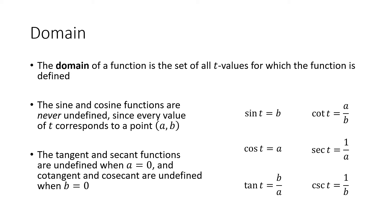Because every angle corresponds to a point on the unit circle, and the sine and cosine are the y and x coordinates of that point respectively, they're always defined — the sine and cosine of any angle always make sense. However, the other four trigonometric functions will be undefined sometimes. Tangent and secant involve dividing by a (the x-coordinate), so they're undefined when the x-coordinate is zero, i.e., when the angle lands on the y-axis. Cotangent and cosecant divide by b (the y-coordinate), so they're undefined when the y-coordinate is zero, i.e., when the point is on the x-axis.